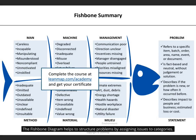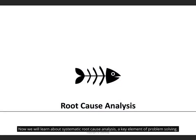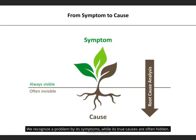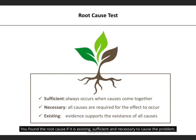The fishbone diagram helps to structure problems by assigning issues to categories. Now we will learn about systematic root cause analysis, a key element of problem solving. We recognize a problem by its symptoms, while its true causes are often hidden. This means that we need to analyze causal relationships to uncover the root causes. You have found the root cause if it is existing, sufficient, and necessary to cause the problem.